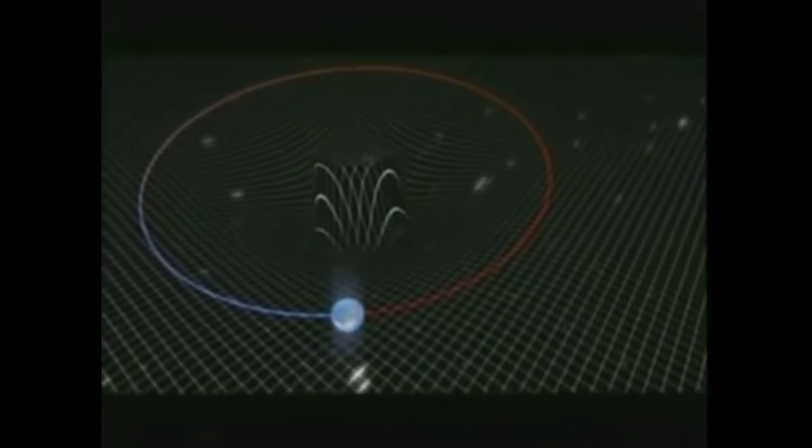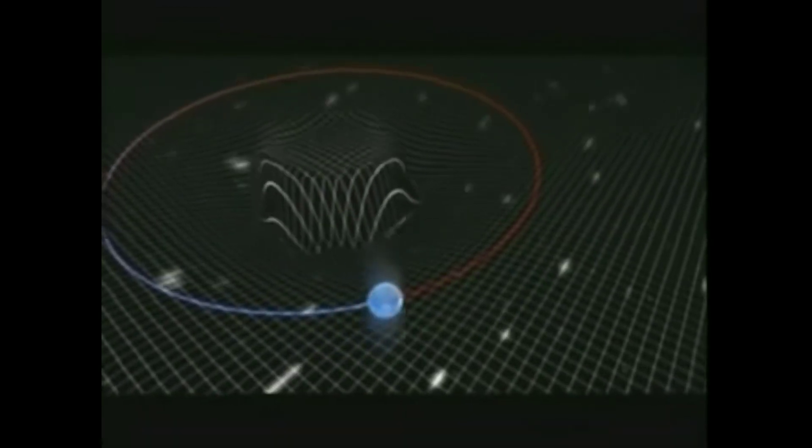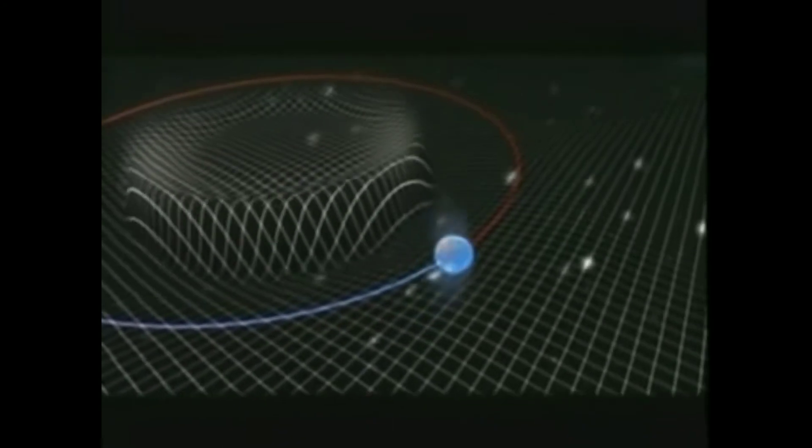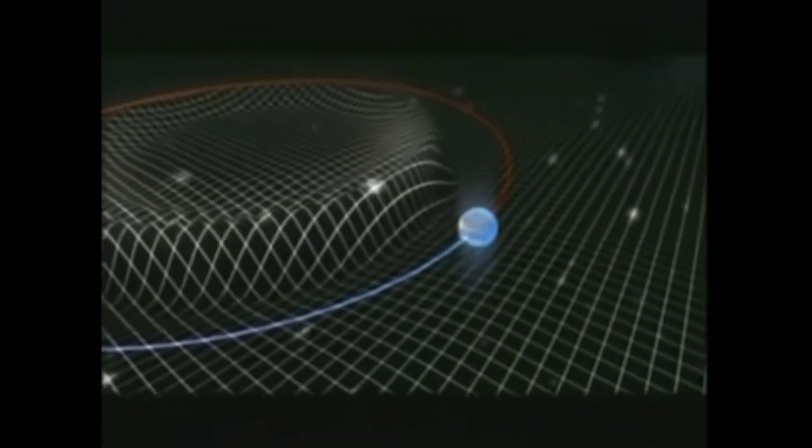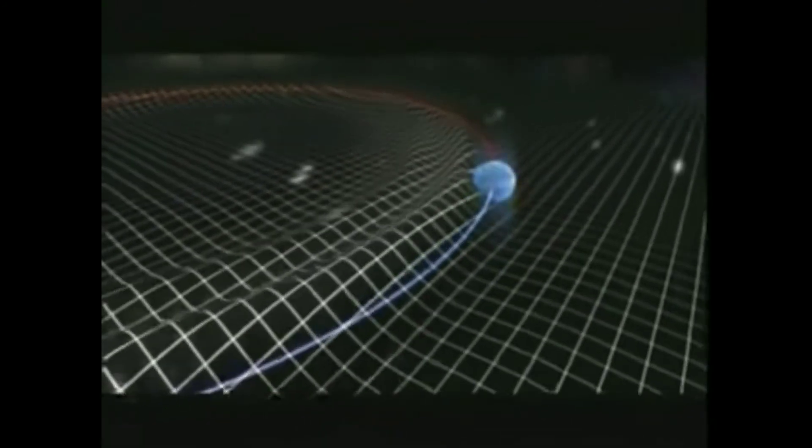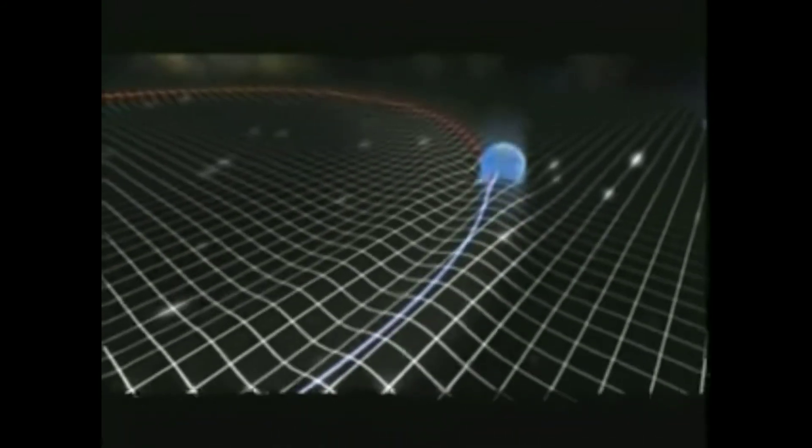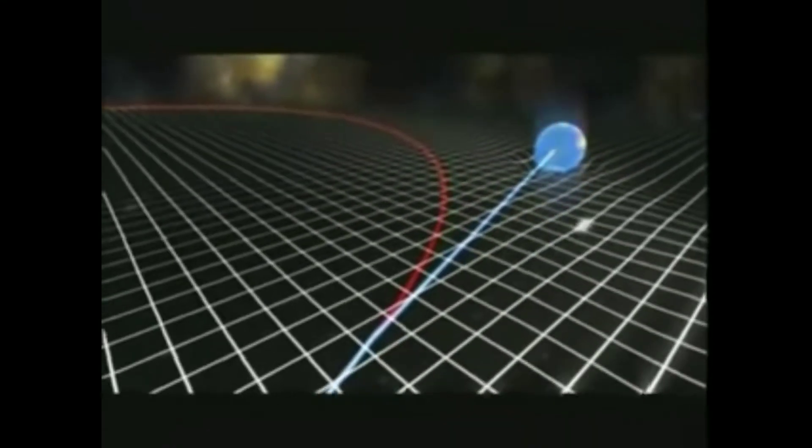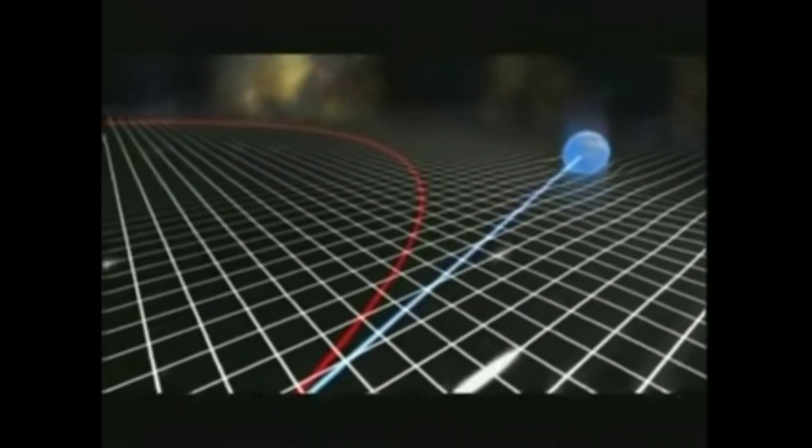The gravitational disturbance that results will form a wave that travels across the spatial fabric in much the same way that a pebble dropped into a pond makes ripples that travel across the surface of the water. So, we wouldn't feel a change in our orbit around the sun until this wave reached the Earth.